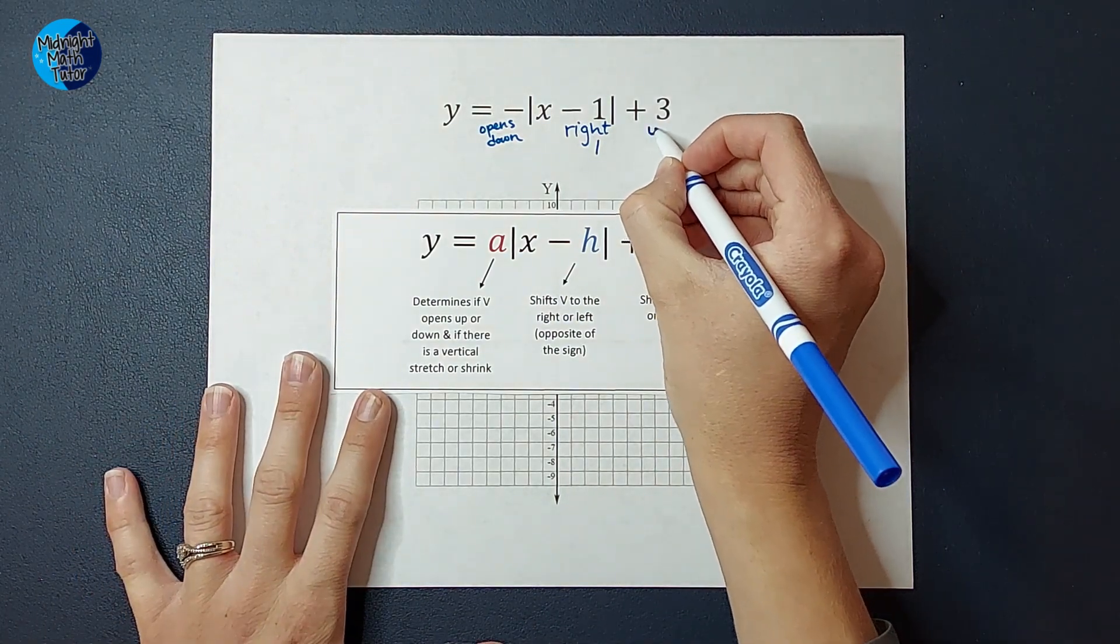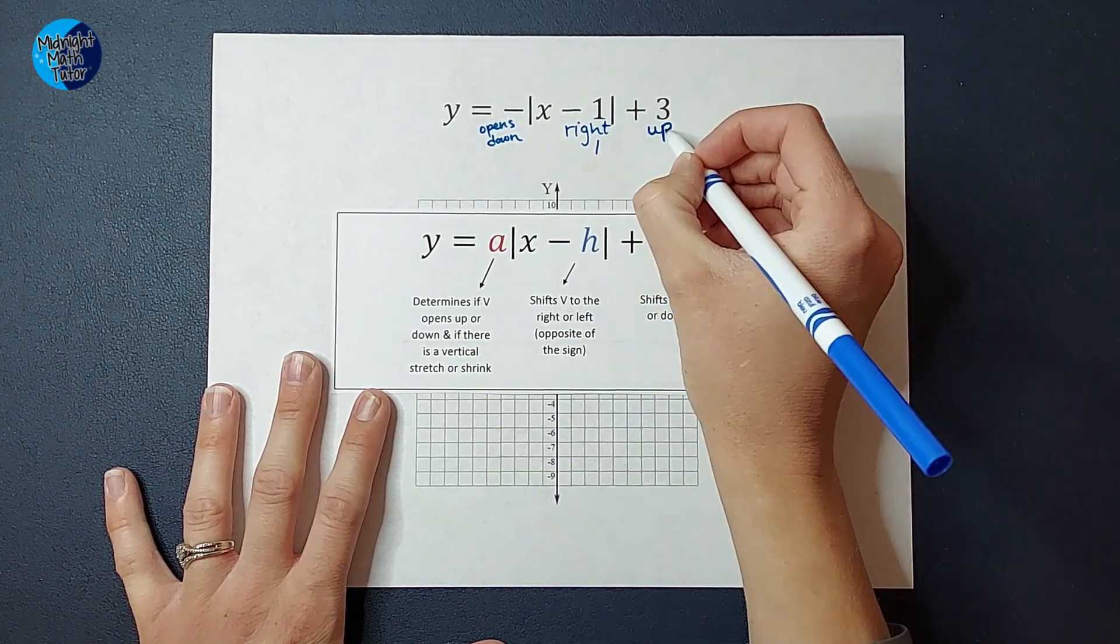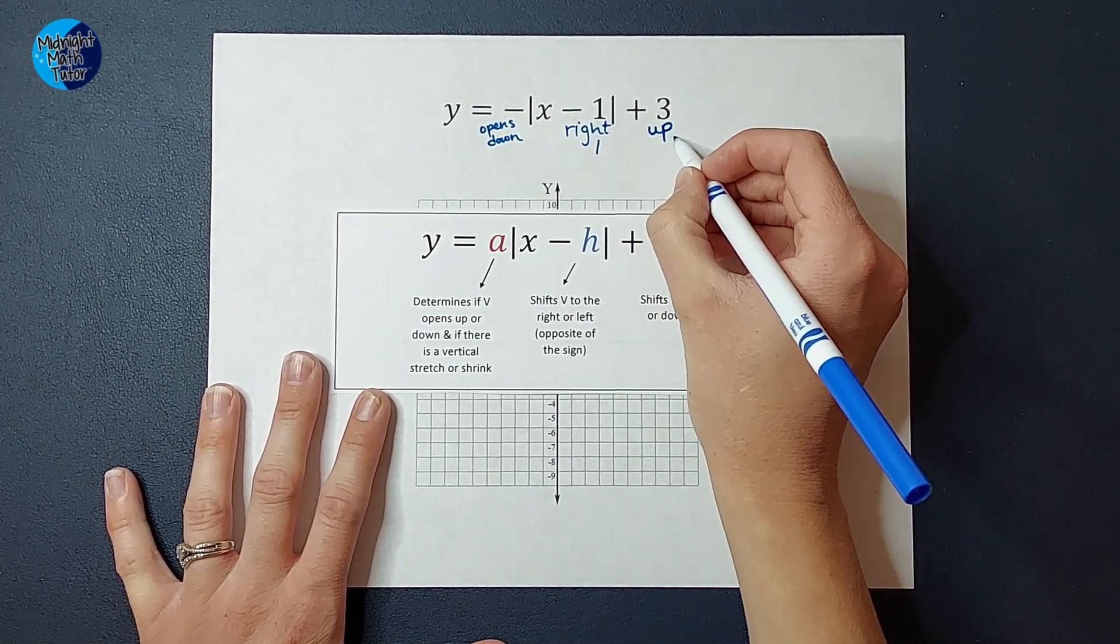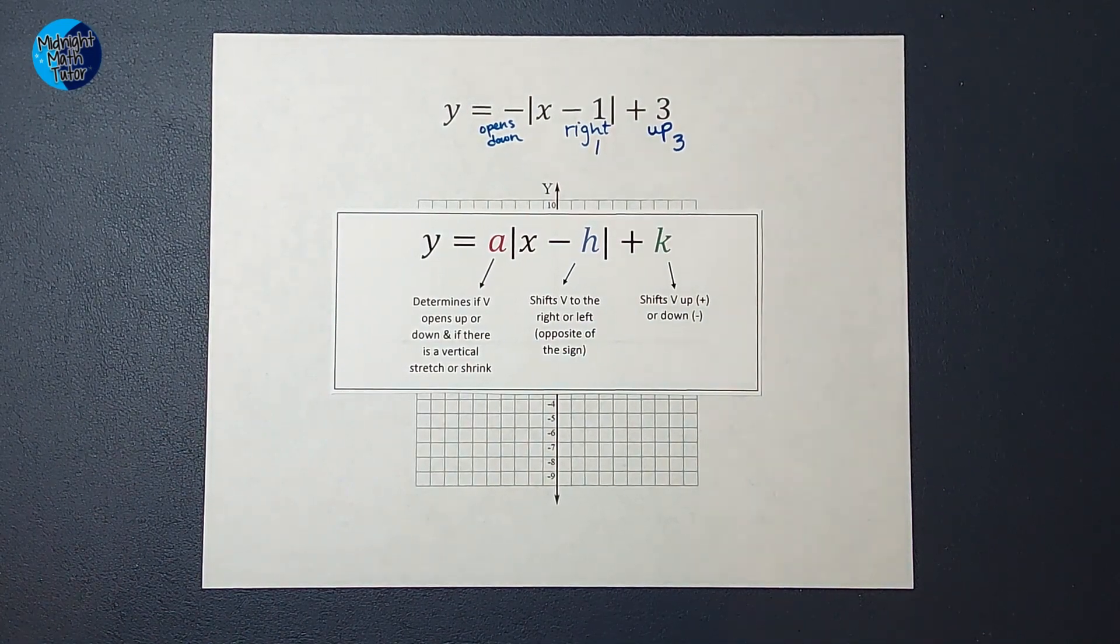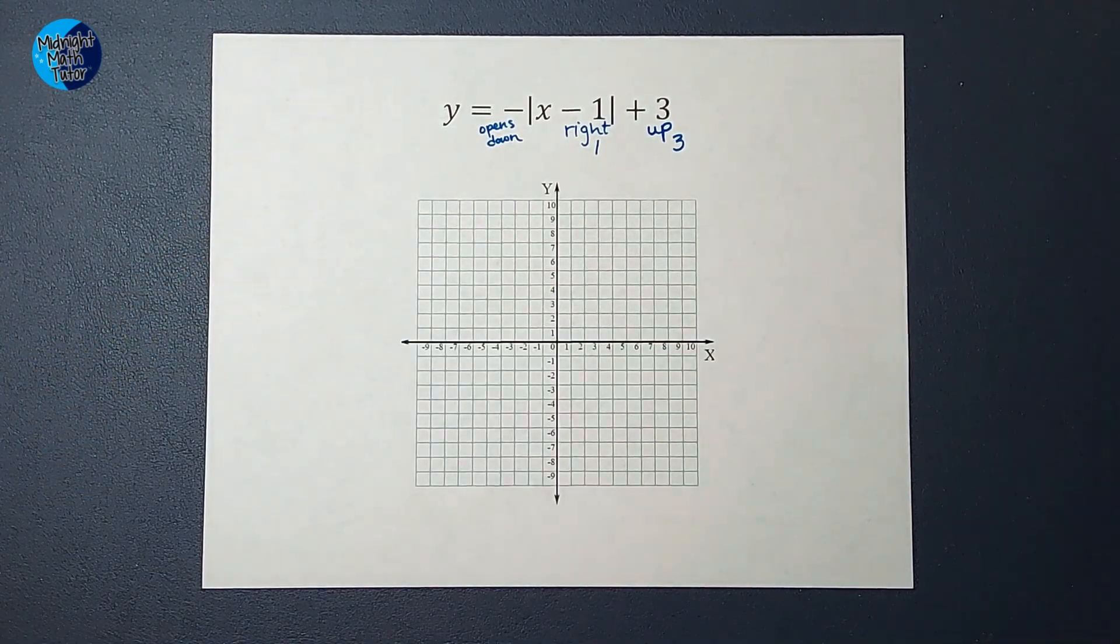Which means that my vertex, or my whole graph really, is going to be shifted up three. So let's go ahead and see what that's going to look like.